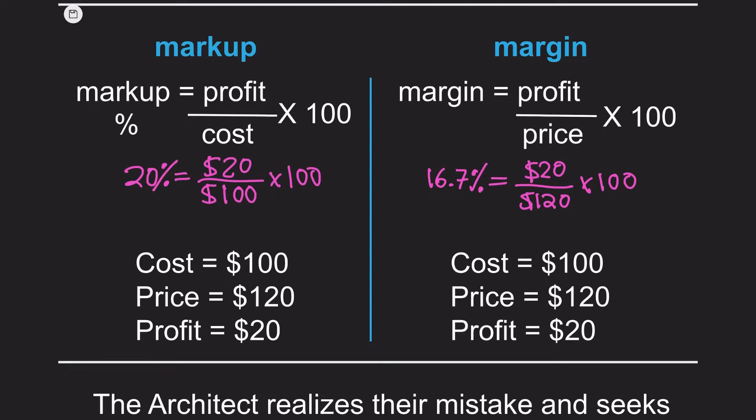Both margin and markup are separate accounting terms that use the same inputs to analyze the same transaction but show different information. Markup is the retail price for a product minus its cost. In architecture terms, it's the final billable hourly rate minus the break-even hourly rate, which shows the profit in dollars. In this example, the architect's cost is $100 an hour to cover their own salary, benefits, and any other overhead — that's the break-even cost.